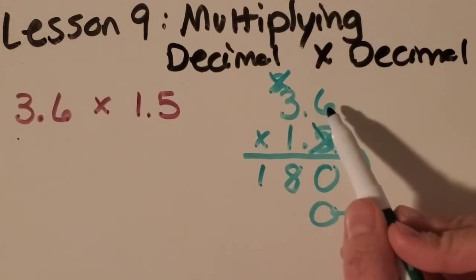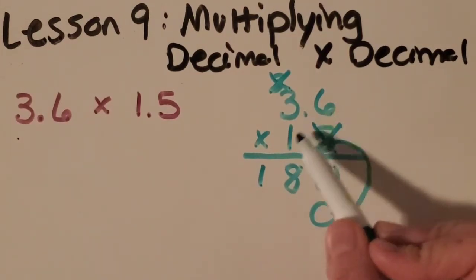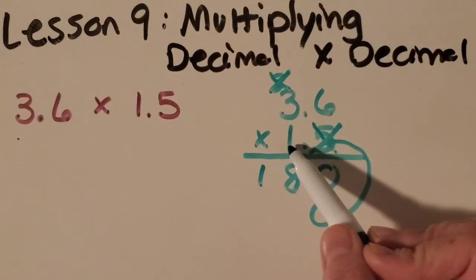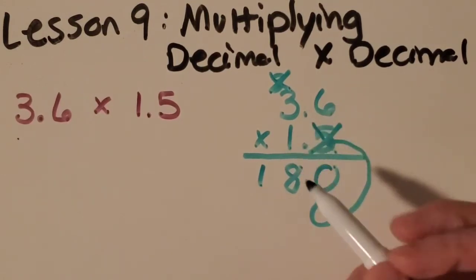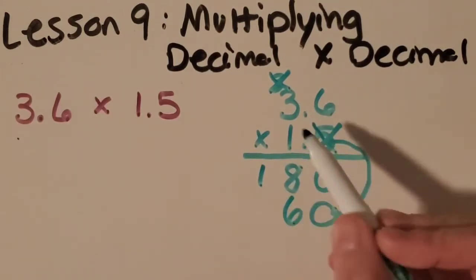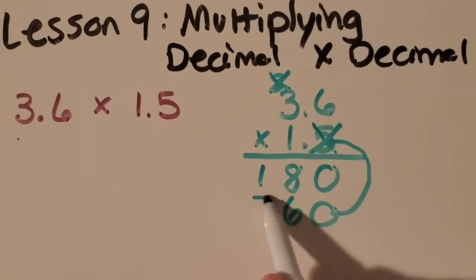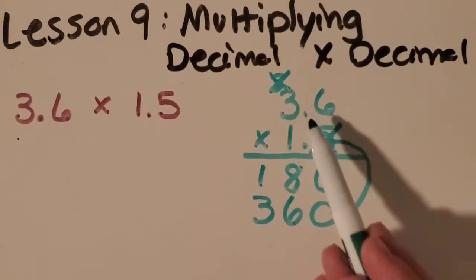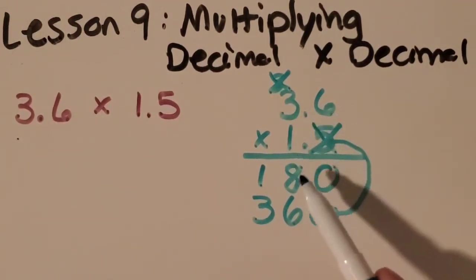Okay then I'm going to multiply everything times the 1. So 6 times 1 is 6 and 3 times 1 is 3. Notice how I'm not doing anything with my decimal points yet, sorry. I'm leaving them alone for now. I'm going to place it at the end.